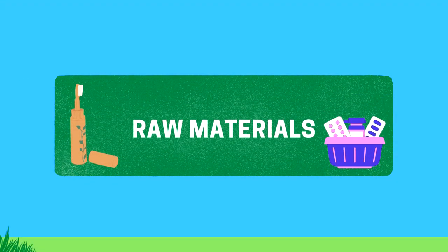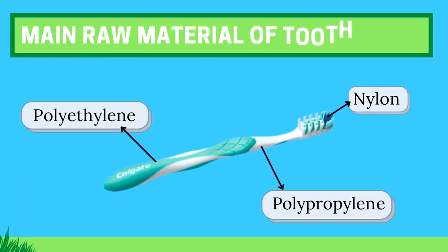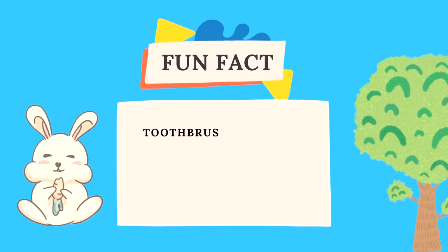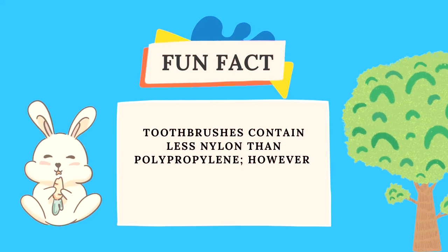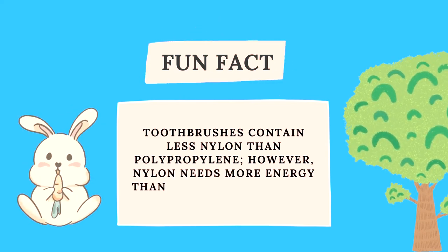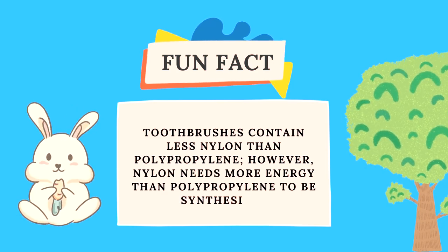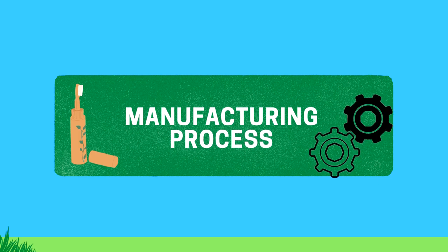The first stage is raw materials used in making a toothbrush. The handles are made of plastics — mainly polyethylene or polypropylene — while the bristles are often made of nylon. Fun fact: even though toothbrushes contain less nylon than polypropylene, nylon actually needs more energy than polypropylene to be synthesized. With that fun fact, let's now learn how a toothbrush is made from scratch.